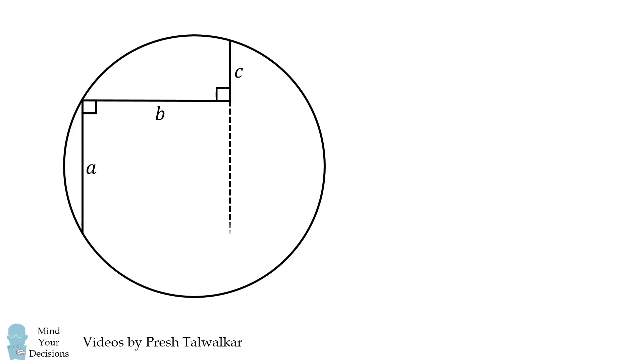First, we'll extend this line segment to a length of A. We're then going to extend it to be a chord of the circle, and by symmetry this line segment will have a length of C.